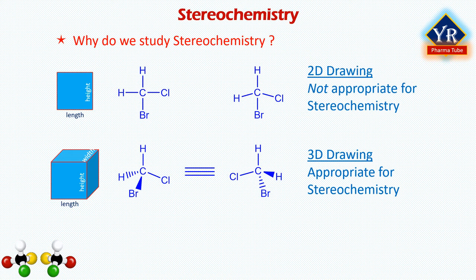A 2D structure represents a structure with just two dimensions, that is length and height, but a 3D structure represents three dimensions — length, height and width. A 2D structure is a flat structure, whereas a 3D structure is a life-like structure. In a 2D structure, we calculate only the x-axis and y-axis, while in a 3D structure, we calculate x-axis, y-axis and z-axis. This knowledge is important for studying various organic molecules, especially chiral molecules. Drawing and studying 2D structures are not appropriate for stereochemistry, whereas only 3D structures are appropriate.